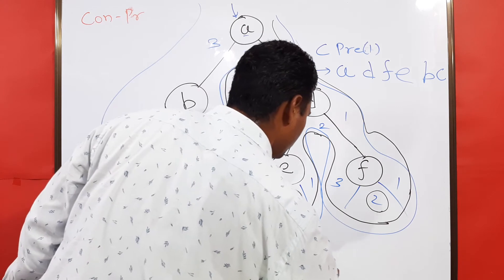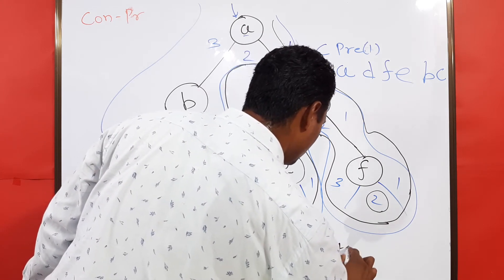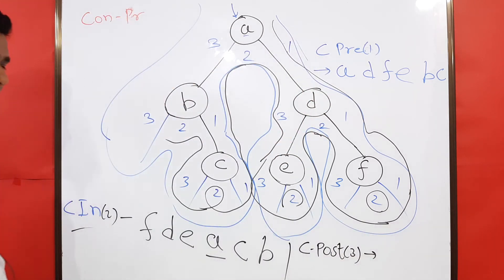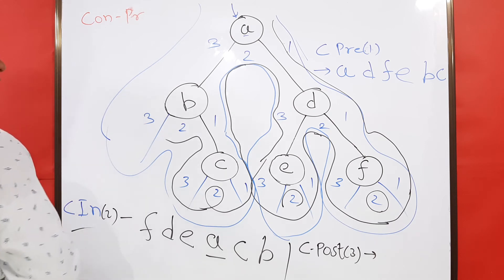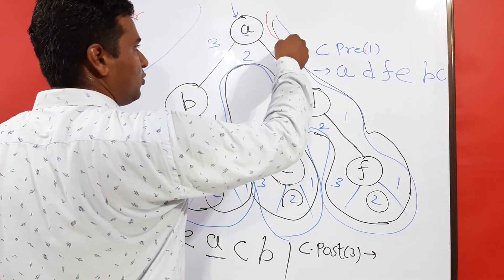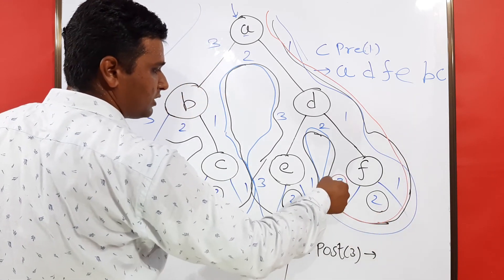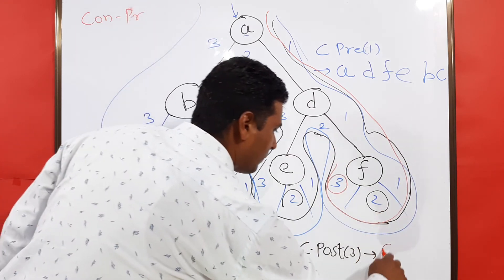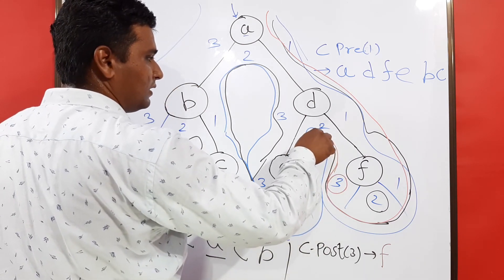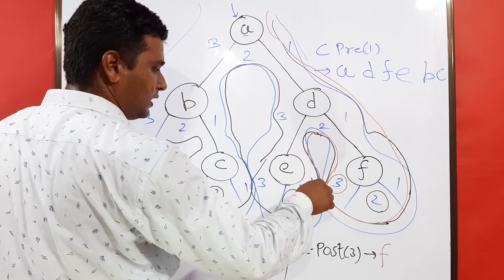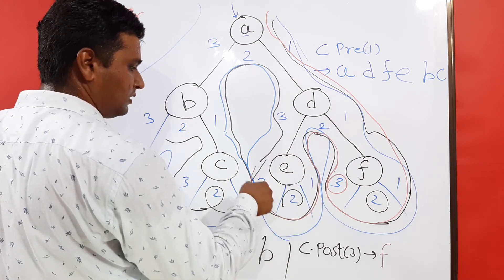Similarly I can write for converse post-order — that is number three. We start the same way with the root node A. I want three — so I look for where we are getting three. I got three at F, so I write F. Then going to D — I don't want three there — so I got three at E, and I write E.